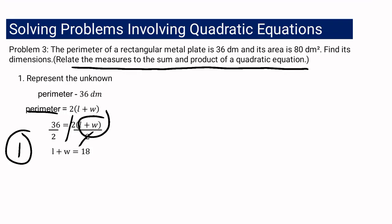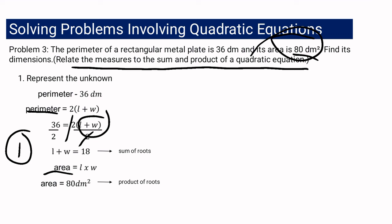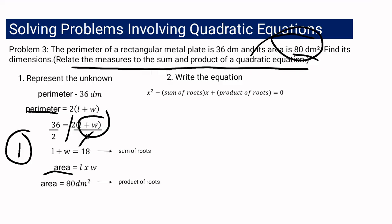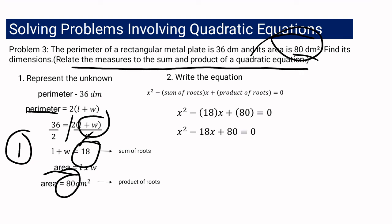The second equation comes from the area: length times width equals 80. We relate these to the sum and product of roots. L plus W equals 18 is the sum of the roots, and L times W equals 80 is the product of the roots. Using the concept x squared minus (sum of roots)x plus (product of roots) equals 0, we substitute to get x squared minus 18x plus 80 equals 0.